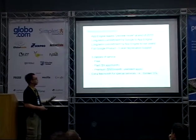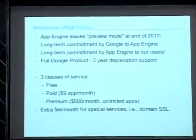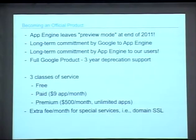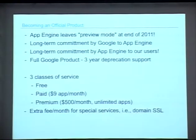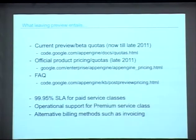App Engine is going to become an official product — it's coming out of beta at the end of this year. Which means the company believes in App Engine, so we're not going to be canceled. If for some reason Google does cancel it, there's a full three-year notice before the service stops — it's not all of a sudden. There are three classes of service: free, paid, and higher paid. With the premium service you get better support. There's also an extra fee if you want custom SSL. Pricing is more official now — still less than other competitive systems — and you get an SLA guaranteed uptime and support for premium tiers.